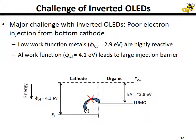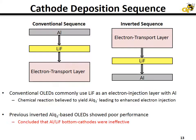The community came up with a solution to this electron injection problem, as shown in the conventional deposition sequence in the left diagram. After an electron transport layer is deposited, a lithium fluoride layer is typically deposited, followed by the cathode.